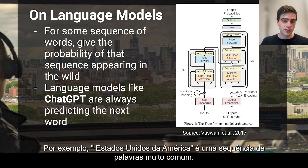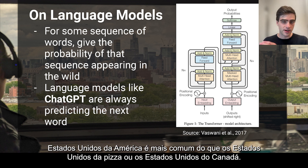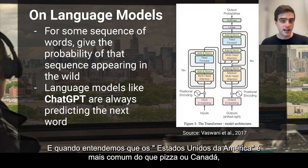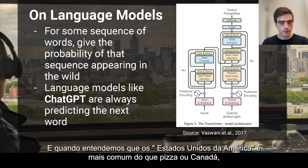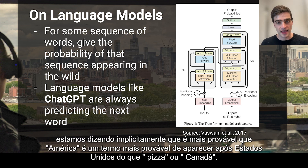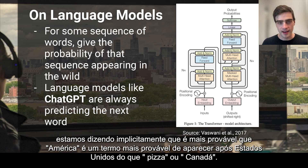For example, 'United States of America' is a very common sequence of words. It's more common than 'United States of pizza' or 'United States of Canada.' And in understanding that 'United States of America' is more common than pizza or Canada, we're implicitly saying that 'America' is more likely to follow 'United States of' than pizza or Canada is.